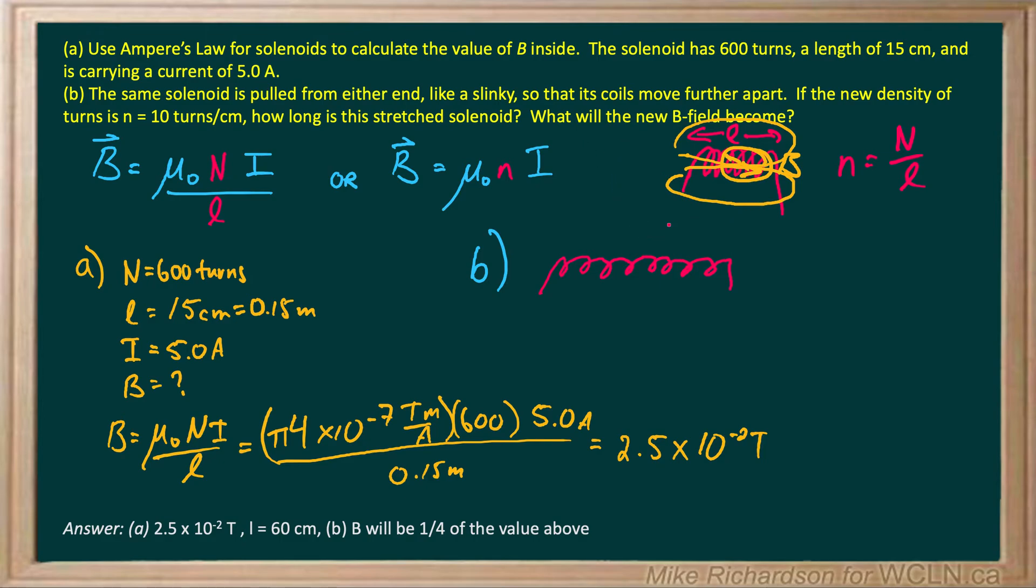The new density is 10 turns per centimeter. How long is this stretched solenoid? We've got 600 turns and 10 turns per centimeter. Using unit conversion: 600 turns times 1 cm per 10 turns. The turns cancel, giving a length of 60 centimeters.